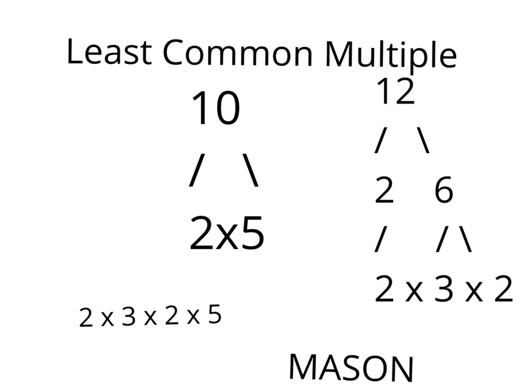For my example, I have 10 and 12. The factor tree for 10 is 2 times 5. The factor tree for 12 is 2 times 6.